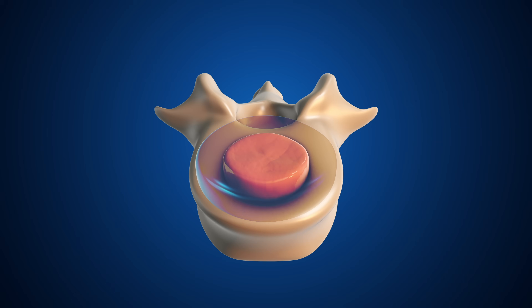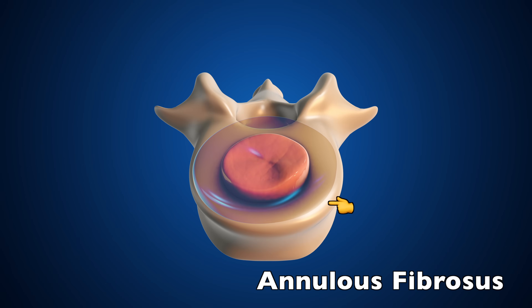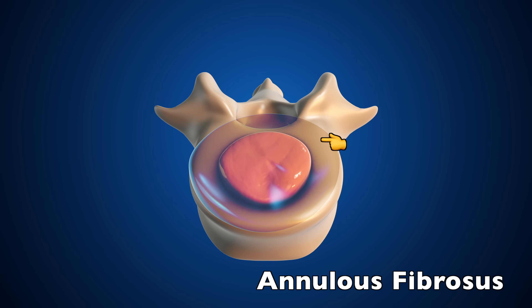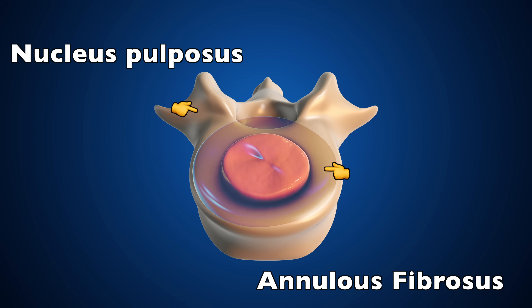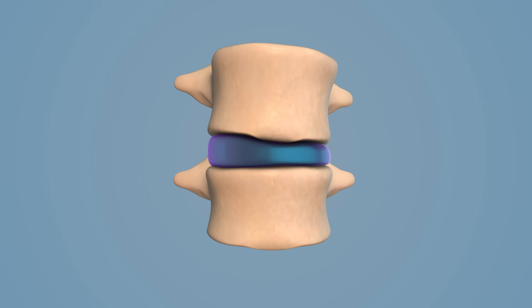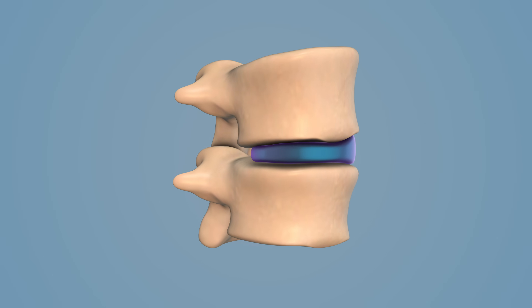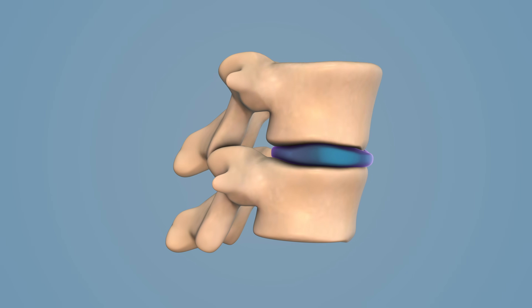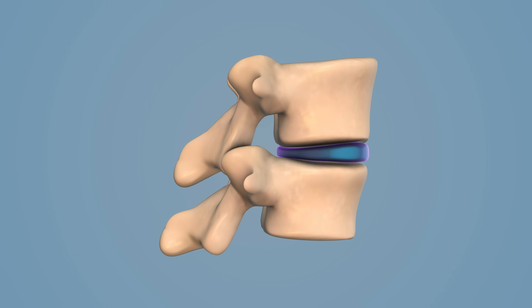Then we need to deal with the squidgy bit inside — that's the nucleus pulposus. This gel-like centre provides flexibility and shock absorption within the spine. The annulus fibrosus, that thick fibrous tissue on the outside, keeps the nucleus pulposus in place and allows it to compress and absorb without moving out of position — and that's the crucial bit.